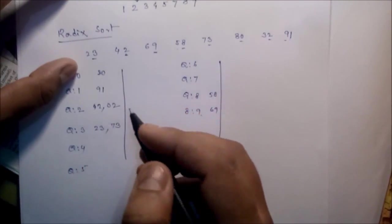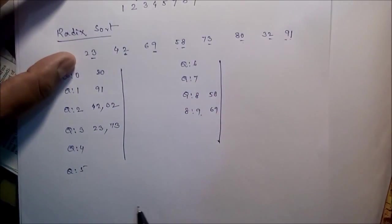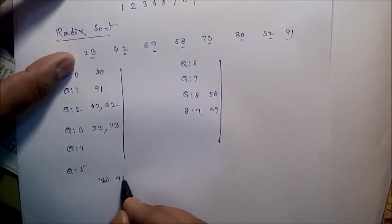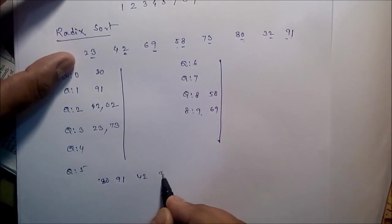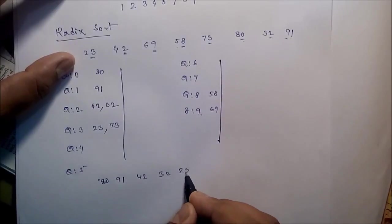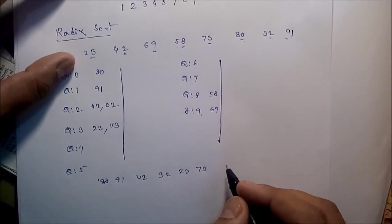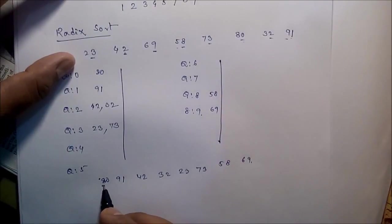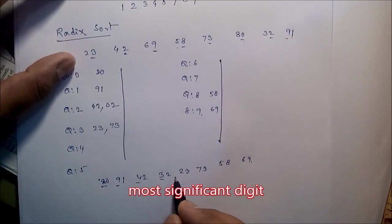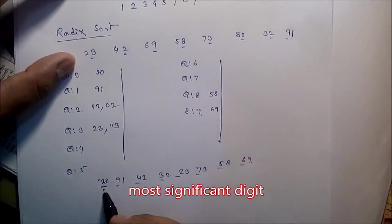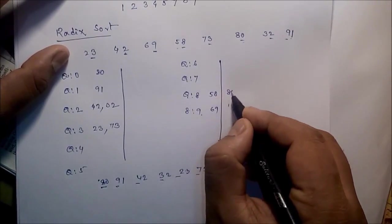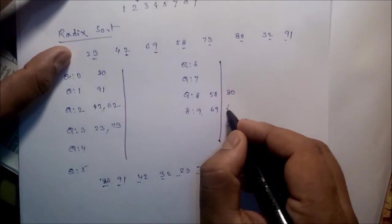58, so here. 73, 80 due to the 0, 32, and 91. Then just copy all the data. So if you copy, then the content of the array will be 80, 91, 42, 32, 23, 73, 58, and 69.